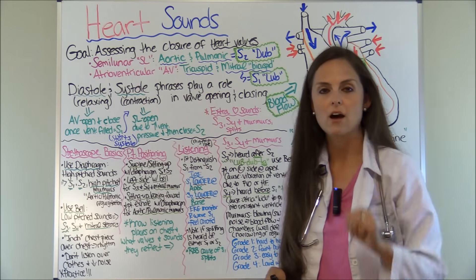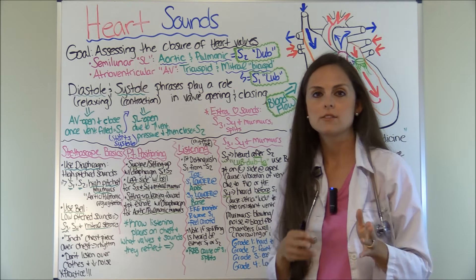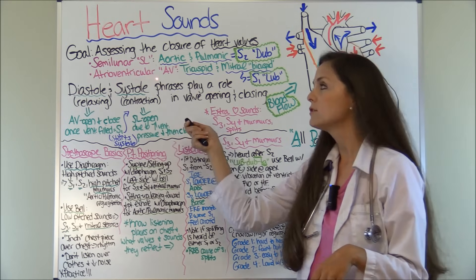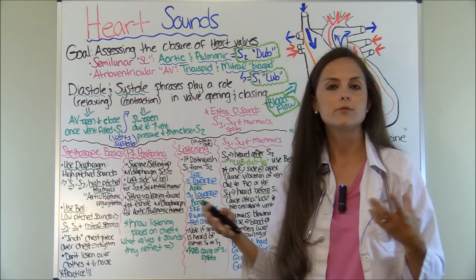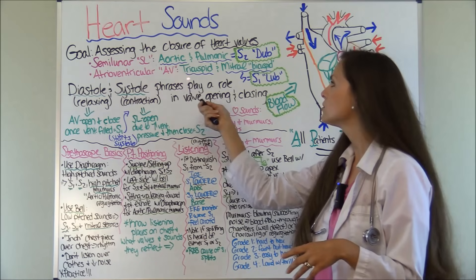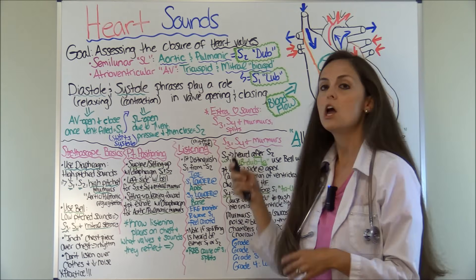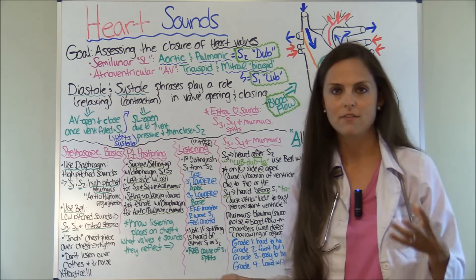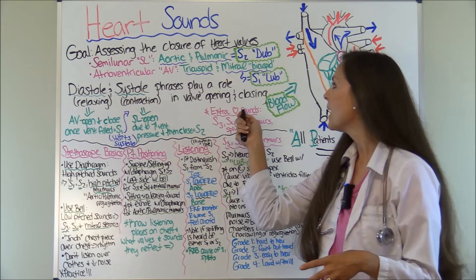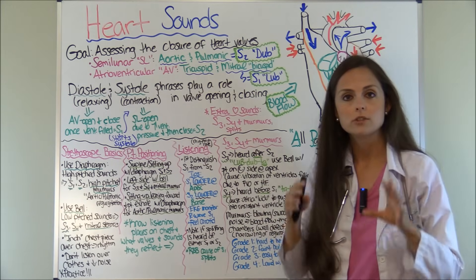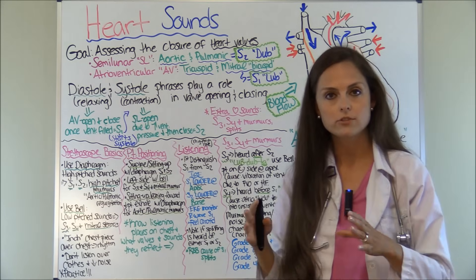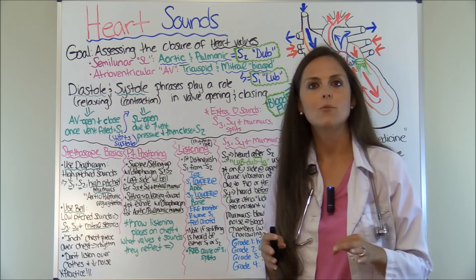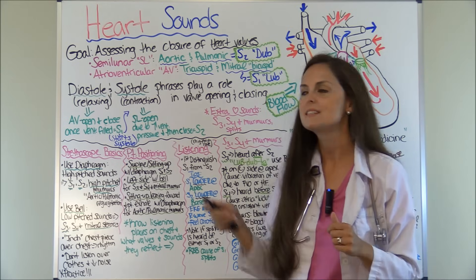We're listening to four valves, categorized into two sets. The first set are your atrioventricular valves, or AV valves, which include your tricuspid and mitral valves. Your mitral valve is also called your bicuspid valve — commit that to memory. Whenever these valves close, that is the first sound you hear, the lub sound, which is S1.